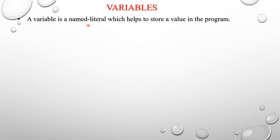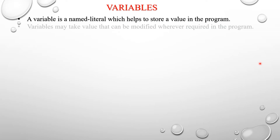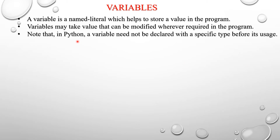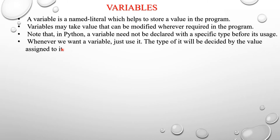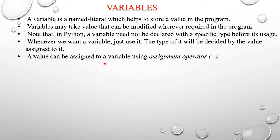A variable is a named literal which helps to store a value in a program. Variables may take values that can be modified whenever required. Note that in Python a variable need not be declared with a specific type before its usage. Whenever we want a variable, just use it — the type will be decided by the value assigned to it. A value can be assigned to a variable using the assignment operator, which is the equals sign.